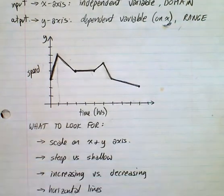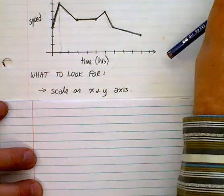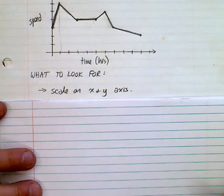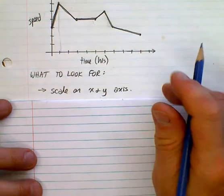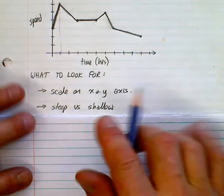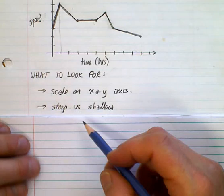And this is essentially what we need to look for, okay? So, what you need to look for when you are identifying or interpreting these graphs is you need to look at the scale on the x and the y axis. You also need to look for a difference in steepness. Is it steep or is it shallow?